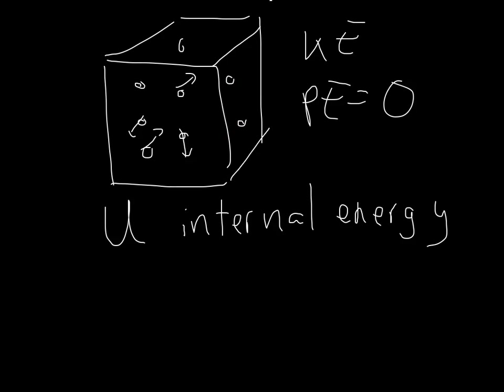When temperature is really high, these molecules are moving faster, and therefore their kinetic energy is higher. When the temperature is low, the molecules are moving slower, therefore their kinetic energy is lower. In fact, the definition of temperature is related to the average kinetic energy of particles. So basically, temperature is proportional to the average kinetic energy of the particles in our box.